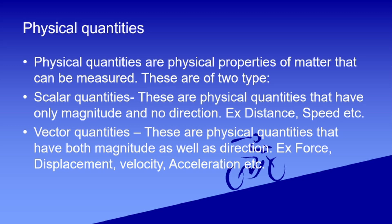The second type are vector quantities. Vector quantities wo physical quantities hain jinko dono magnitude aur direction chahiye — which have both magnitude as well as direction. For example, force: if I say 5 newton force inwards to push a door, the door opens. But if I change the direction to outwards, the door will not open. So both direction and magnitude are important. Aisi quantities jinko define karne ke liye magnitude aur direction dono chahiye, such quantities are known as vector quantities.